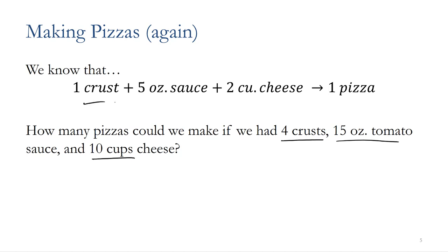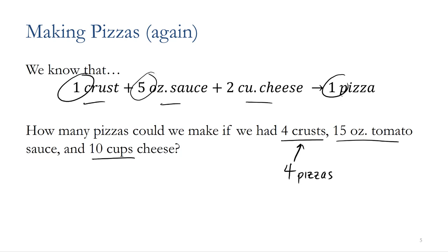We've got three ingredients: crust, sauce, and cheese. We'd have to first figure out how many pizzas we can make from each ingredient. With the crust, since it's a one-to-one ratio, we can make four pizzas. The sauce is a five-to-one ratio, so with the sauce I can only make three pizzas. With 10 cups of cheese, because it's a two-to-one ratio, I can make five pizzas.